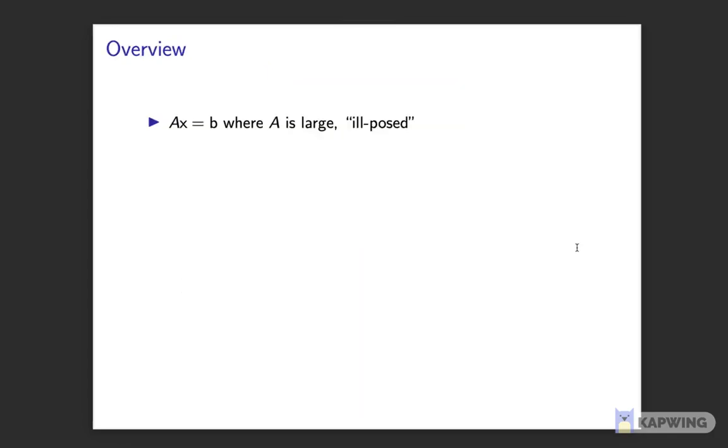To model this kind of situation, we consider the blurring as a matrix acting on a vector of pixels, so x is the true image and b is the blurred image. This problem is ill-posed, so simply applying the inverse to both sides is not a feasible approach.